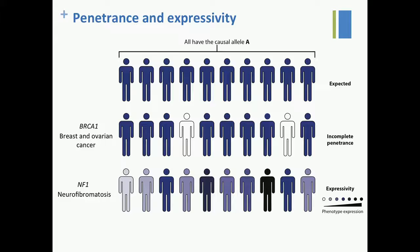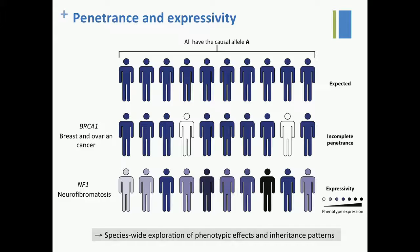We call that expressivity. What's behind expressivity and penetrance — usually we say 'modifiers,' but most of the time we don't know exactly. We also don't know exactly the phenotypic effects and the inheritance patterns of monogenic mutations at a species level.